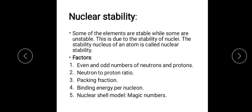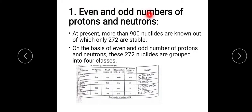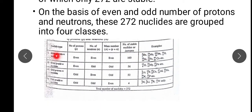Nuclear shell model and magic numbers. Now, factor number one: even and odd numbers of protons and neutrons. So far, 900 nuclides have been discovered, and only 272 are stable — the rest are all unstable. These 272 nuclides are further categorized into 4 classes. Number one: even proton, even neutron — protons are even and neutrons are also even. How many stable nuclides or isotopes are in this category? 160.